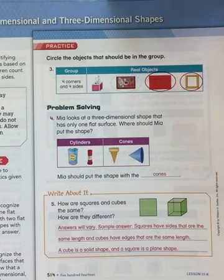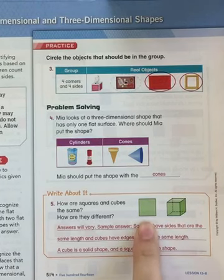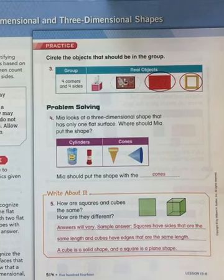Look at number five. How are the squares and cubes the same? How are they different? Well, squares and cubes are similar because the cube's flat surfaces are squares, but the square is a plane shape, and the cube is three-dimensional.